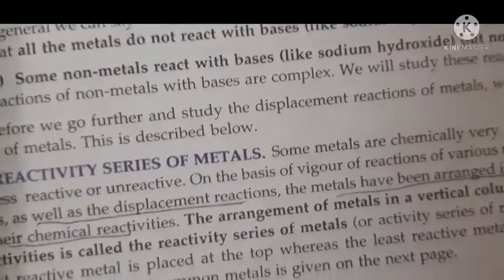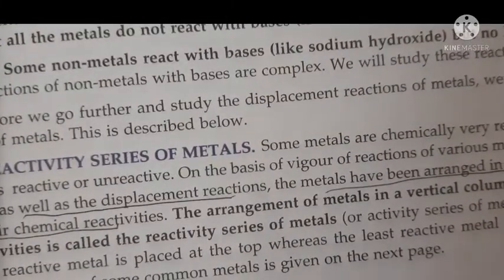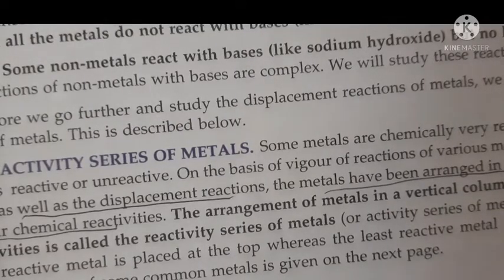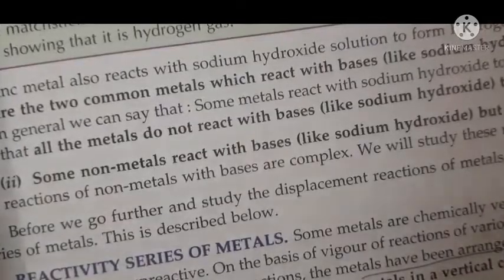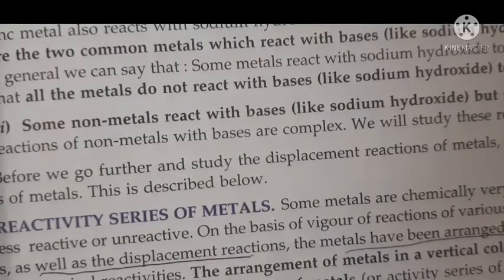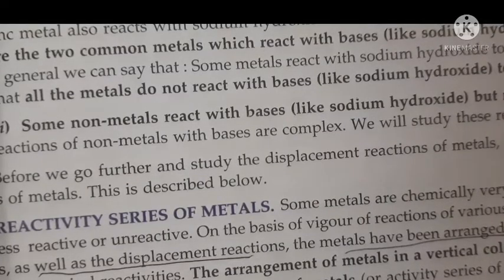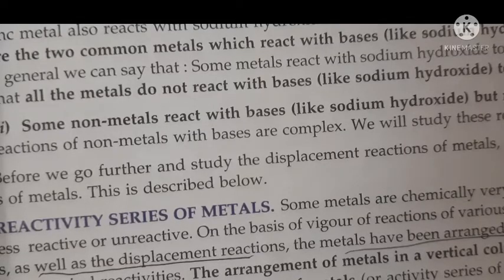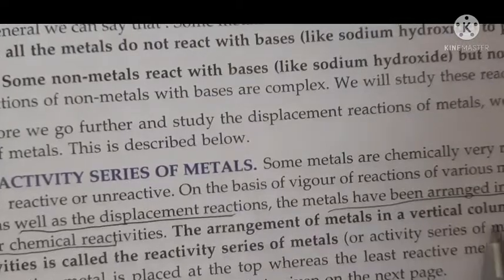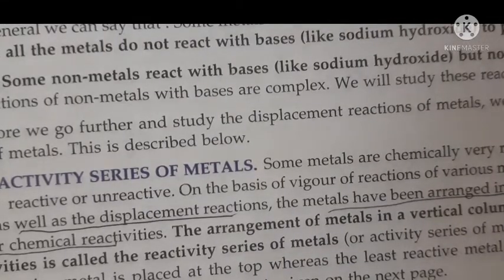You know there are so many metals and all the metals are not equal — they don't have the same reactivity. Some metals are more reactive and some metals are less reactive. In the reactivity series, the metals are arranged in decreasing order of reactivity, meaning the most reactive metal is placed on top and the least reactive is placed at the bottom.